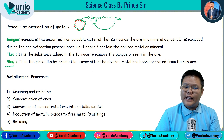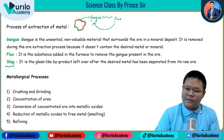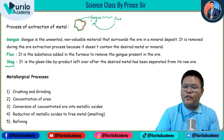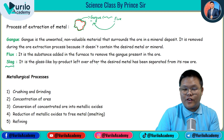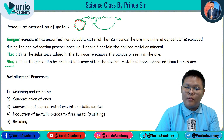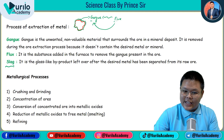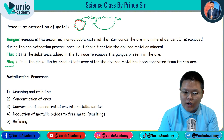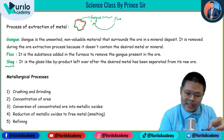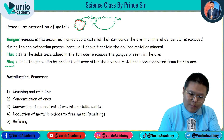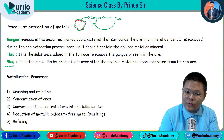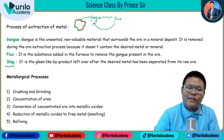And we will discuss the slag — it is the glass-like byproduct left over after the desired material has been separated from its raw ore. When the gangue is removed, the desired metal material is released through this reaction.